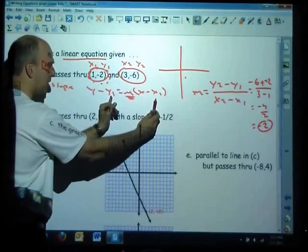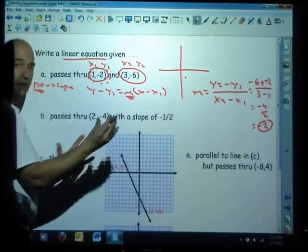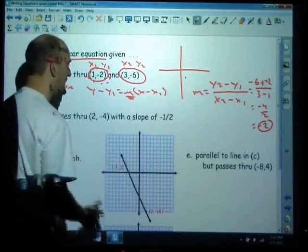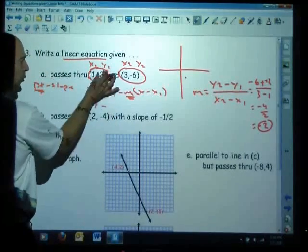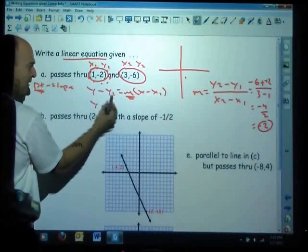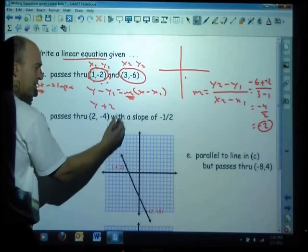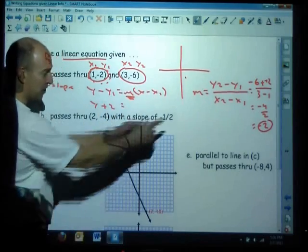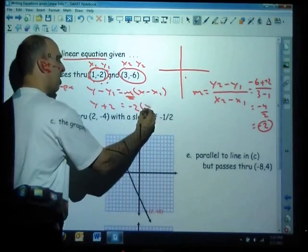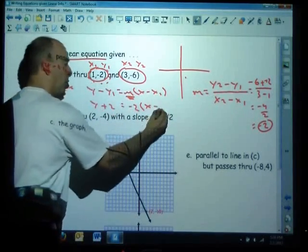And plug in its x value for x1 and its y value for y1. This is my point of choice, this is my slope, and I get my equation just like that. So y minus y1 would be y minus negative 2, which in fact is y plus 2, equals the slope which I predetermined as negative 2 times x minus 1.